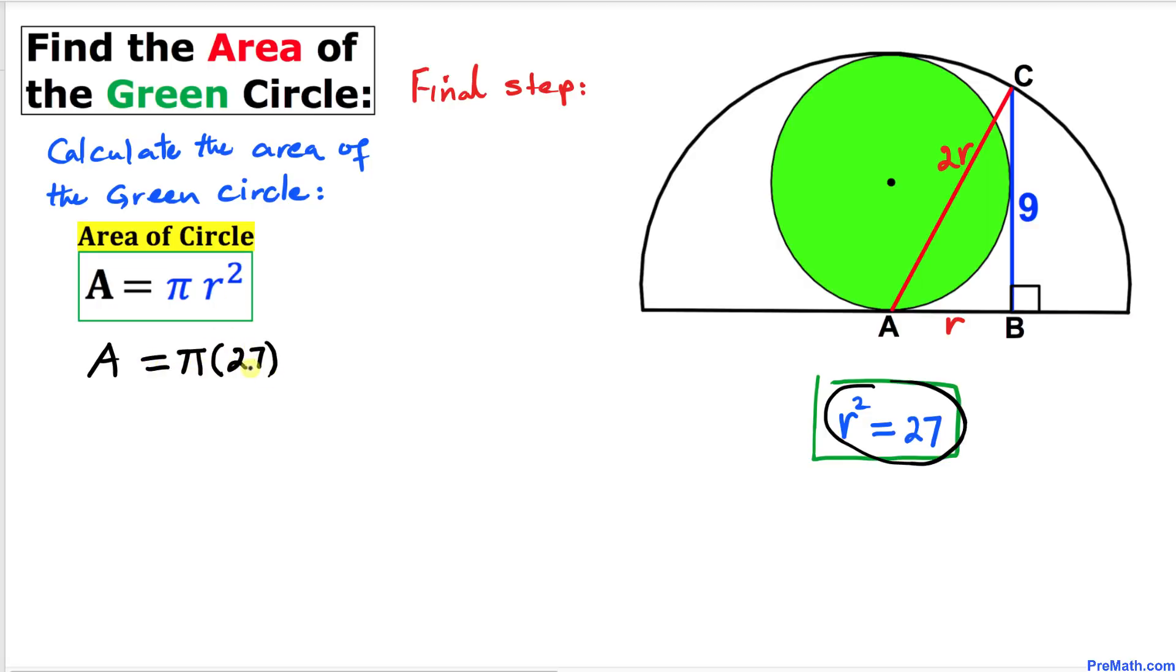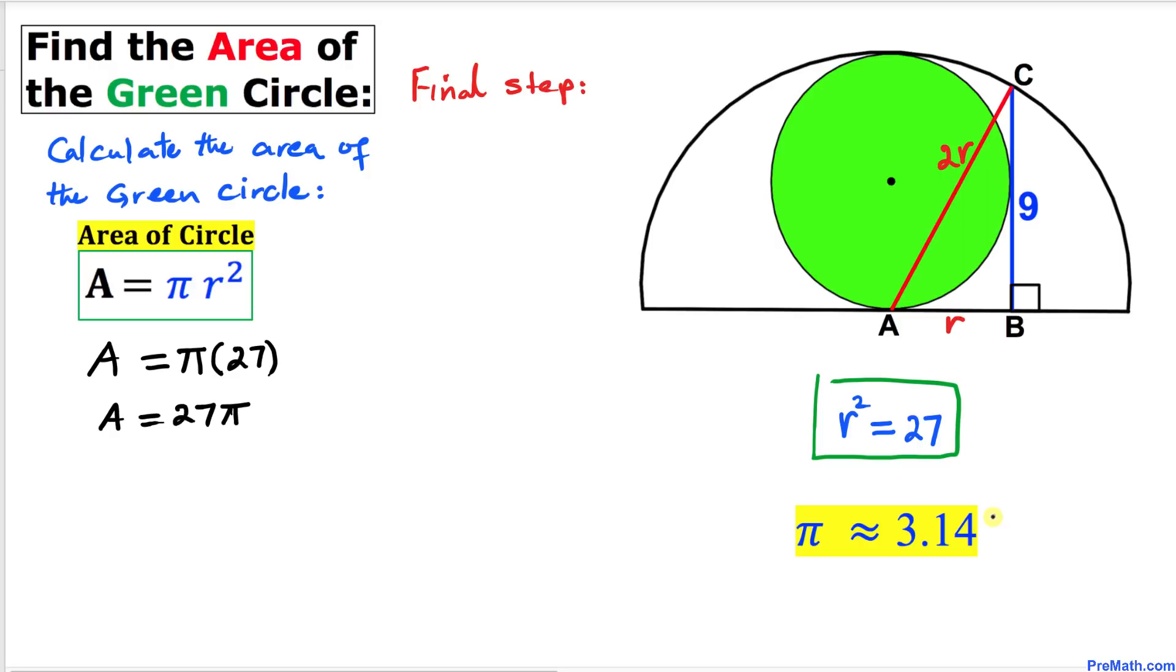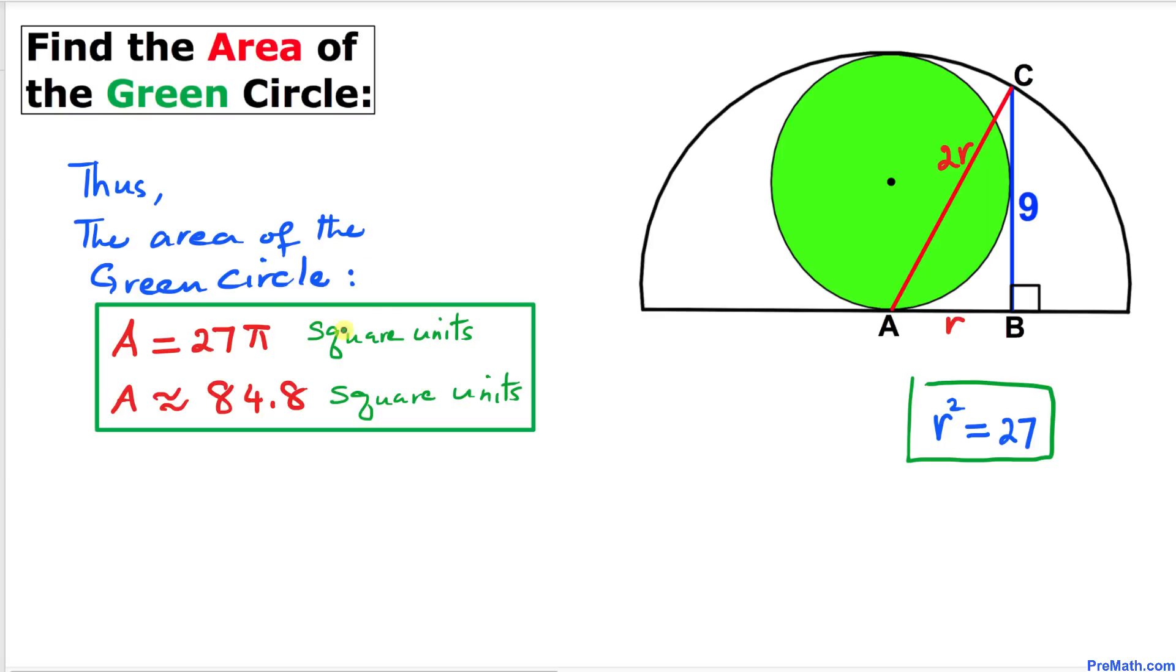If I replace π by 3.14, then our area is going to be approximately equal to 84.8. Thus, the area of this green circle turns out to be 27π square units, or in terms of decimals, approximately equal to 84.8 square units.